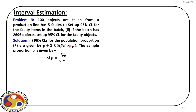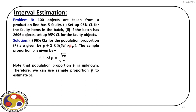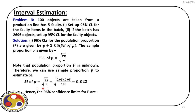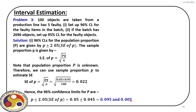We can calculate the standard error of p. Note that the population proportion capital P is not known in these cases, so we use the sample proportion small p to estimate the standard error. The standard error turns out to be 0.022, and therefore using this standard error, the 96% confidence limits for p are 0.095 to 0.005.